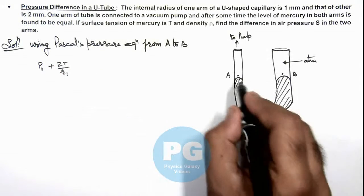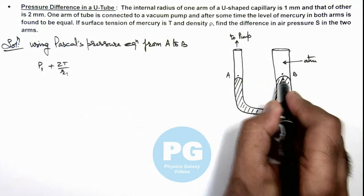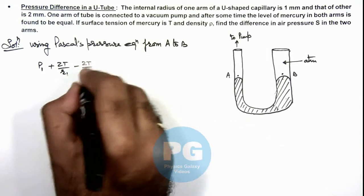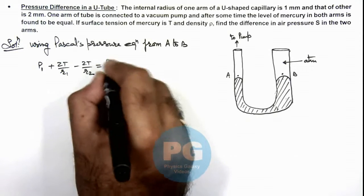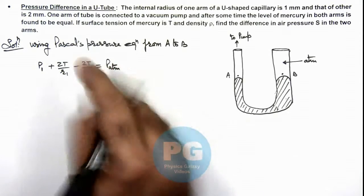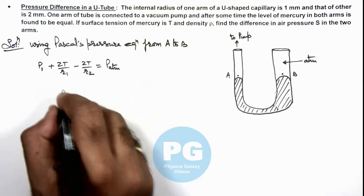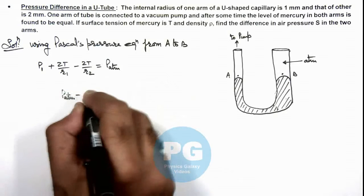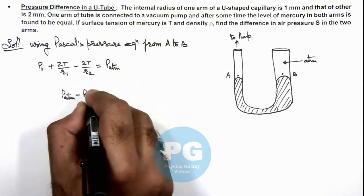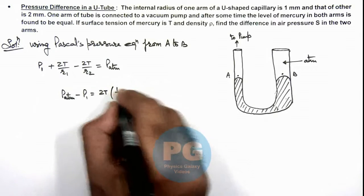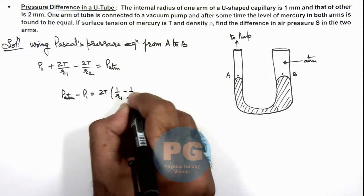And the pressure will be same at this point, so here pressure will be minus 2T by R₂, and this should be equal to P atmosphere. So if we calculate the difference here, we can directly get the value P atmosphere minus P₁ will be equal to 2T times (1 by R₁ minus 1 by R₂).